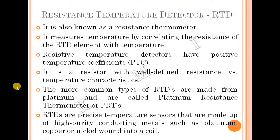The first type is RTDs, resistance temperature detectors, also known as resistance thermometers. It measures temperature by correlating the resistance of the RTD element with temperature — that is, there is a resistance-temperature relationship.